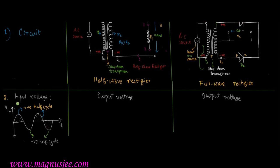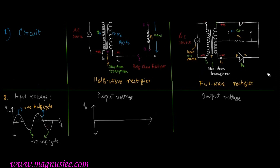Now we can draw the output waveform for the half wave rectifier. Along the x-axis, time t is plotted, and along the y-axis, output voltage VO is obtained across the load resistance RL. In the output waveform, there will be only positive half cycles — the negative half cycle is removed.